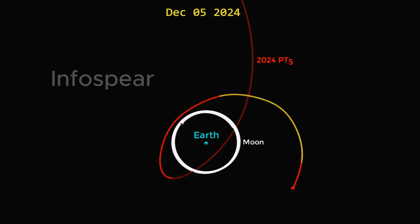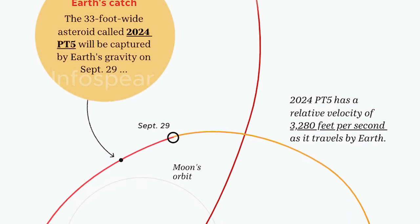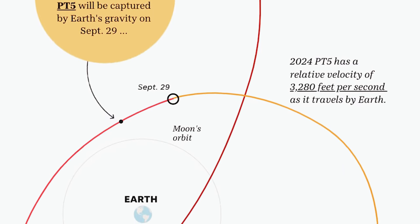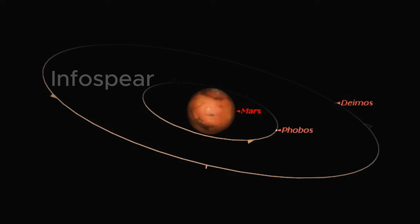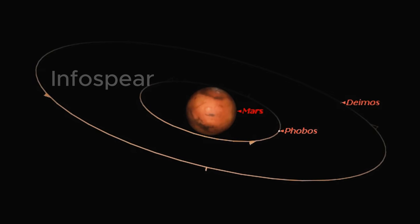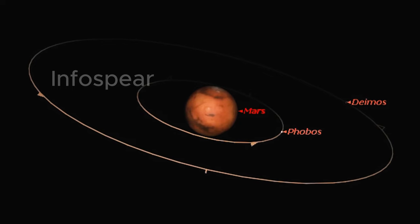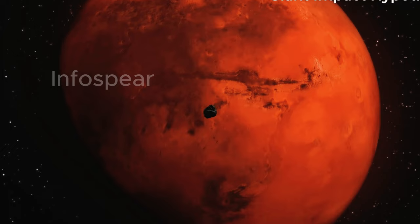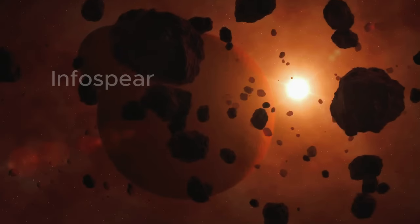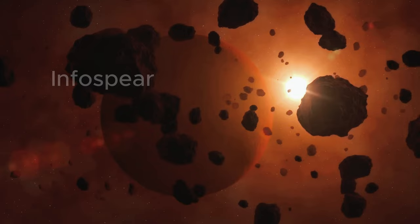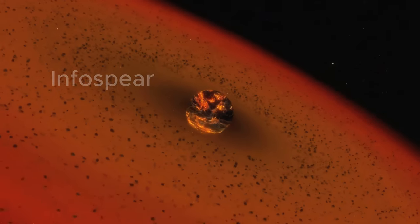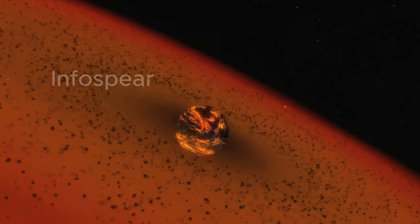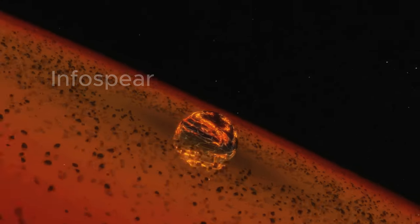But PT5's quick pit stop around Earth isn't just another cool space fact, it's scientifically game-changing. By observing how this asteroid interacts with Earth's gravity, we might uncover new clues about how moons like Phobos and Deimos, the quirky, potato-shaped moons of Mars, ended up in their weird orbits. These Martian moons are like cosmic puzzles, and PT5 could provide the missing piece to help scientists solve their strange origin story. Who knew a tiny rock could hold the key to unlocking Mars' most mysterious companions?